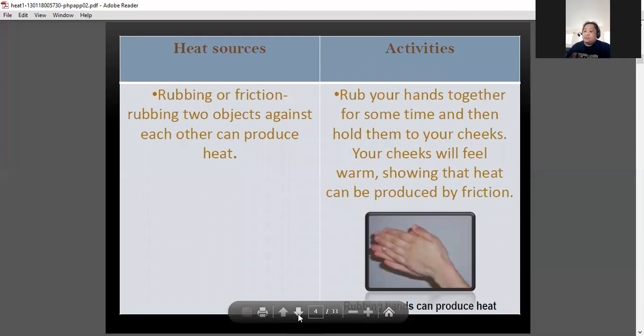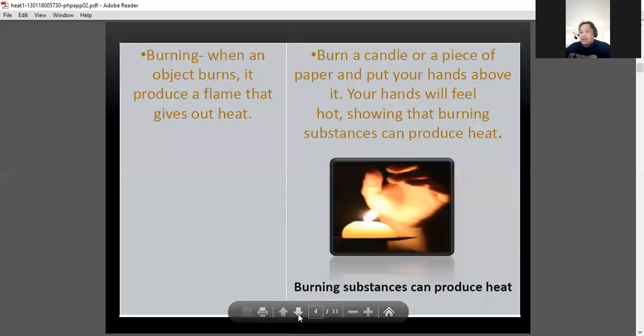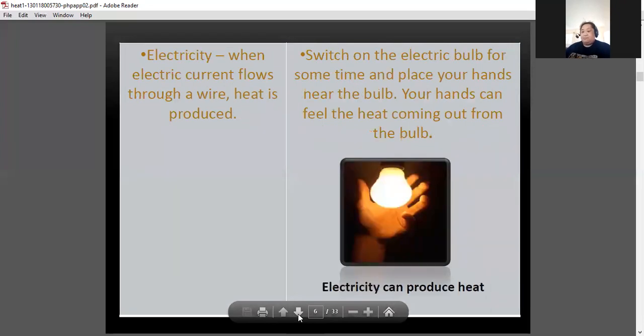So one of the main source of heat is number one, the rubbing or friction. The rubbing of two objects against each other can produce heat. So in activity number one, you rub your hands together. Next is burning. When objects burn, it can produce a flame that gives out heat.